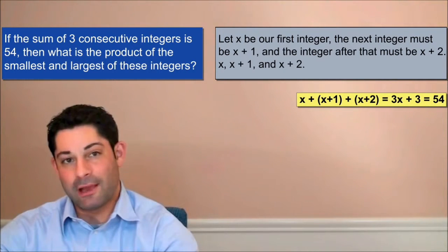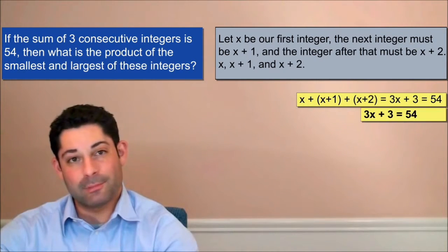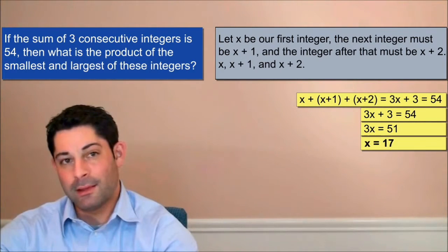Clearly, we can solve for x with the given information. So let's go ahead and do that. 3x plus 3 equals 54, so 3x must equal 51, and x must equal 17.